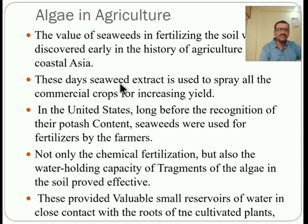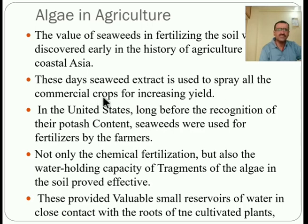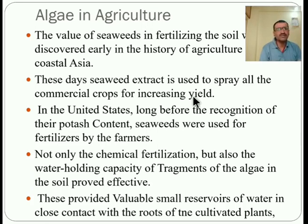Seaweed — known locally as 'shevar' — can be made into an extract that is sprayed on commercial crops to increase yield. From the algae or seaweed, an extract can be prepared and applied to agricultural crops, which increases their yield. That is another use of algae.